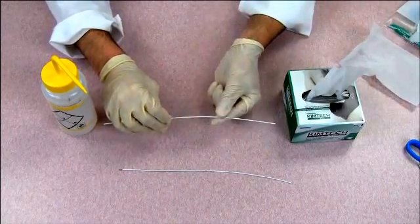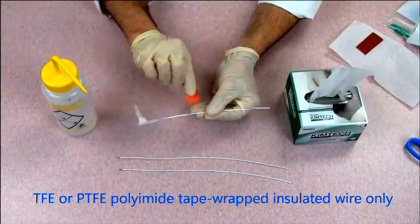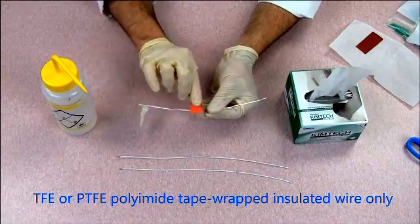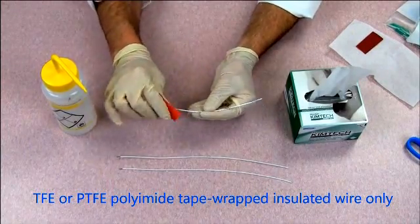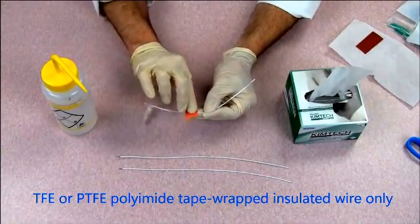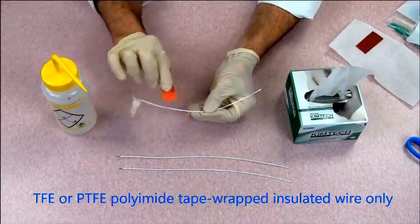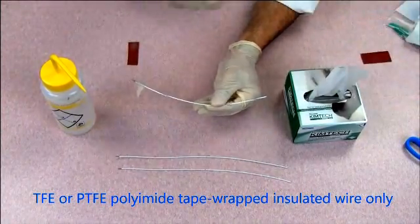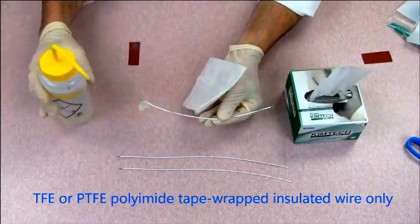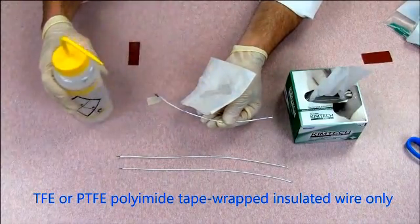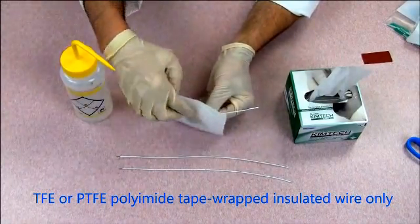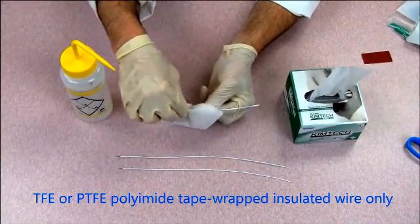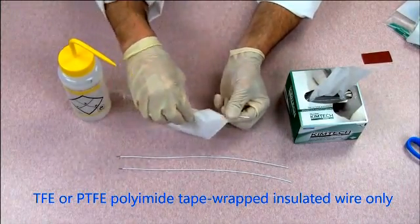If you're repairing TFE or PTFE polyamide tape wrapped insulated wire, you have one additional step. Using 240 grit emery cloth, abrade the wire circumferentially in the damaged area. Remove loose particles with isopropyl alcohol. Dry the wire with a wipe.